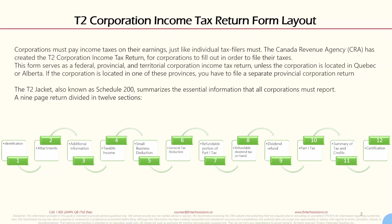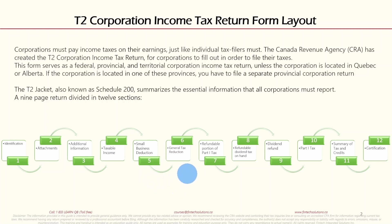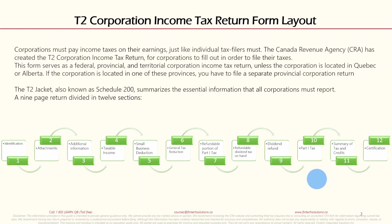The T2 jacket, also known as Schedule 200, summarizes the essential information that all corporations must report — a nine-page return divided into 12 sections. The sections are: (1) Identification, (2) Attachments, (3) Additional Information, (4) Taxable Income, (5) Small Business Deduction, (6) General Tax Reduction, (7) Refundable Portion of Part One Tax, (8) Refundable Dividend Tax on Hand (RDTOH), (9) Dividend Refund, (10) Part One Tax, (11) Summary of Tax and Credits, and (12) Certification.